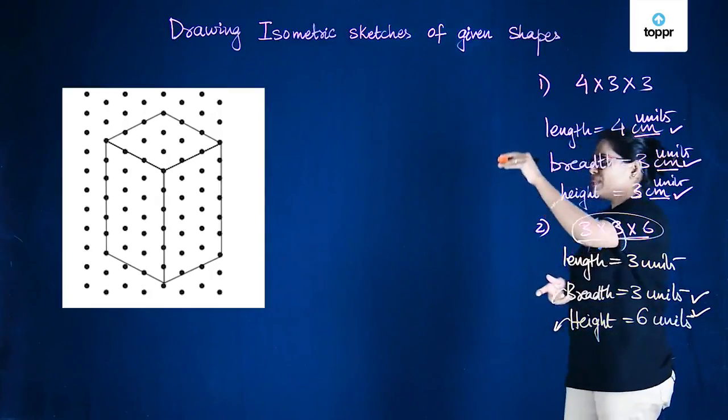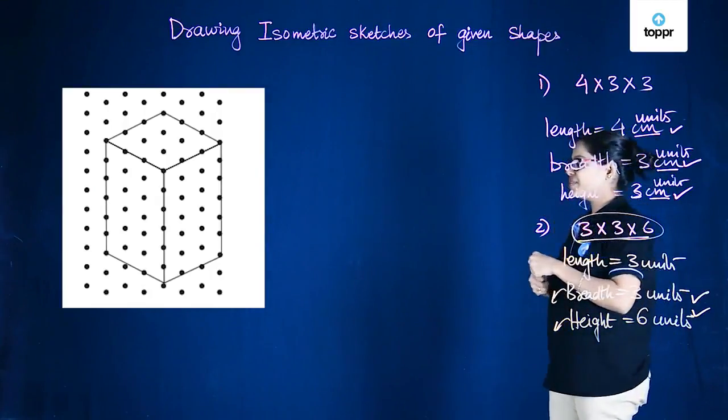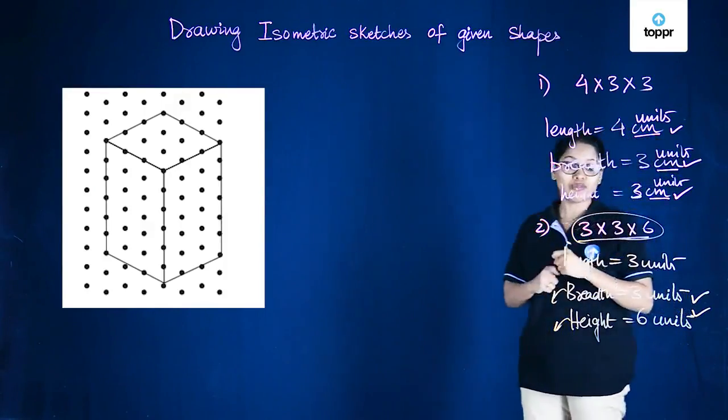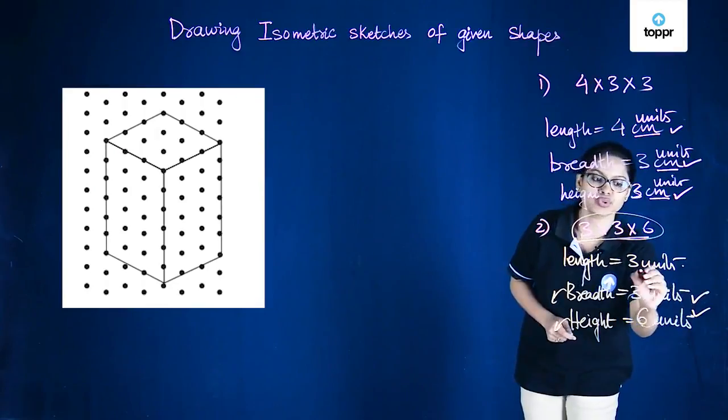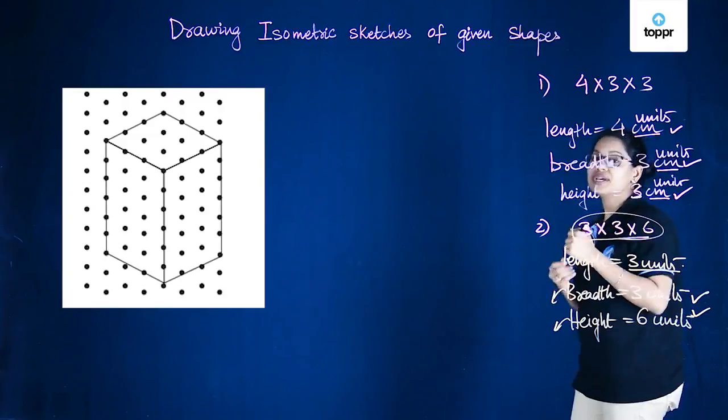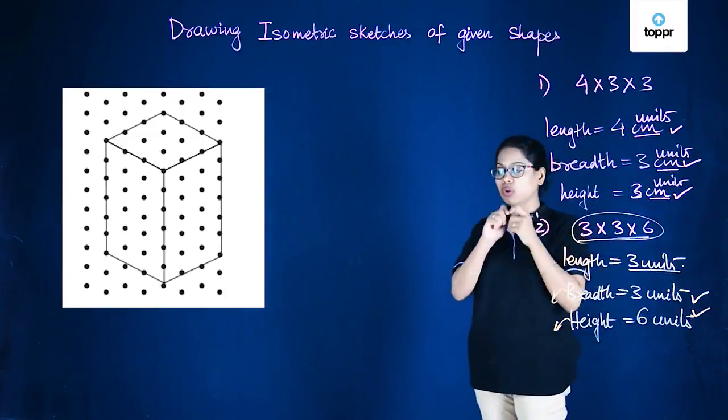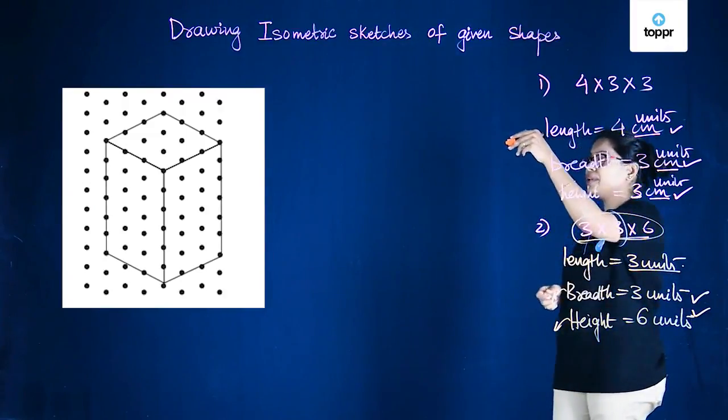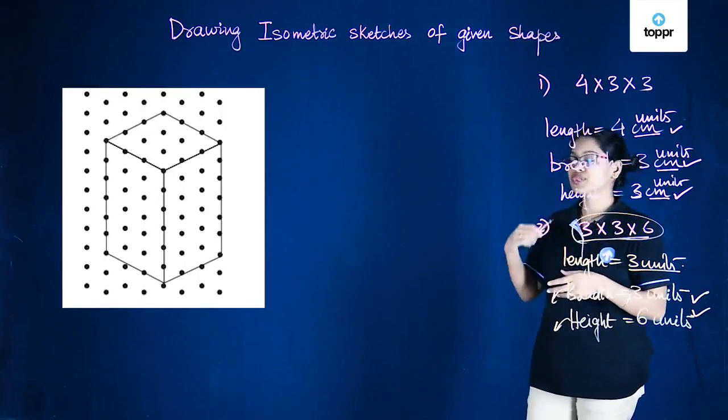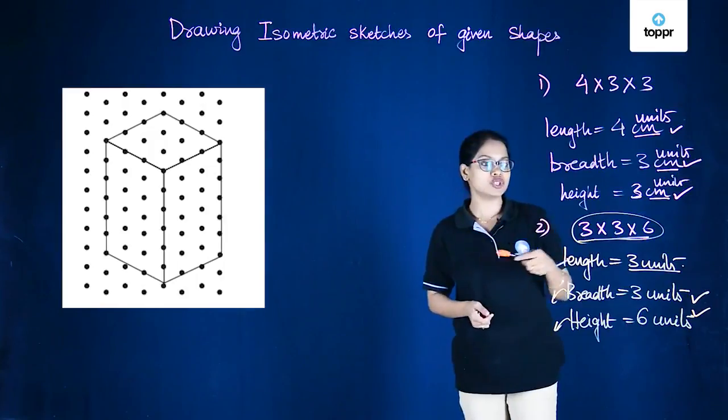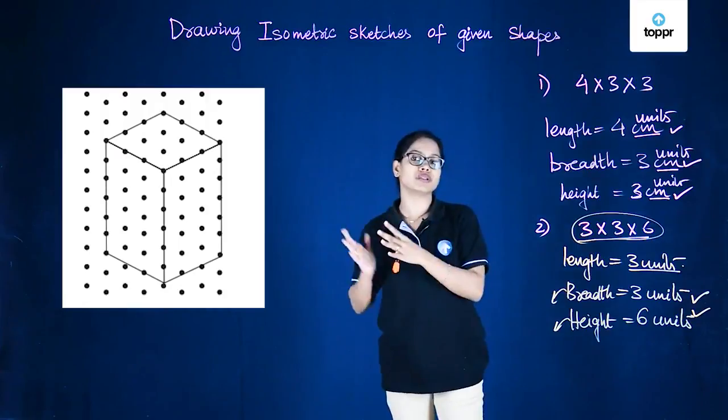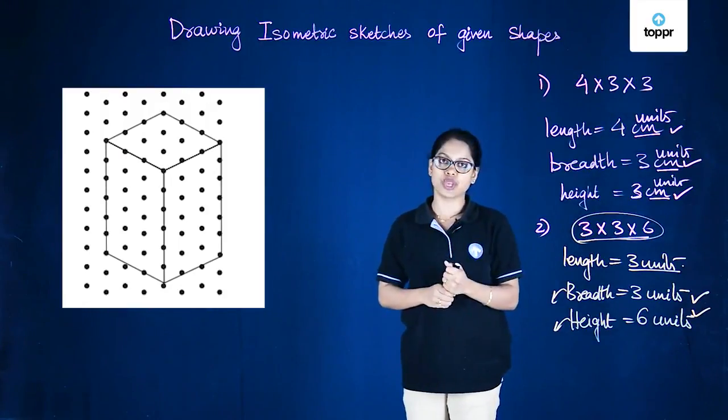Now once we have the rectangle, we'll proceed as in the previous case. From these three coordinates, we draw parallel lines of length 3 units. Now these are the parallel lines. After getting the parallel lines, all we need to do now is connect the matching corners. Now after connecting the matching corners, what we have here is a cuboid of dimension 3 by 3 by 6. So in this way we can use an isometric paper to draw isometric sketches of various shapes.